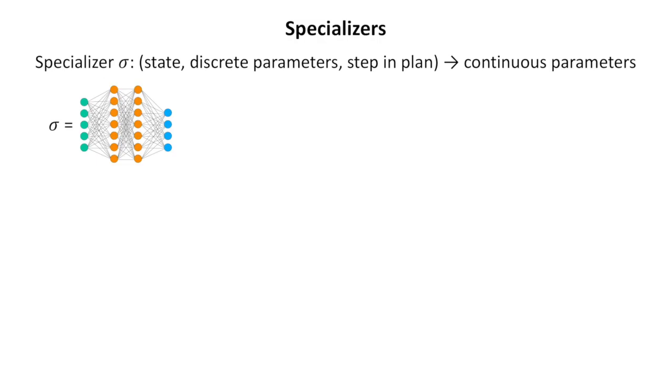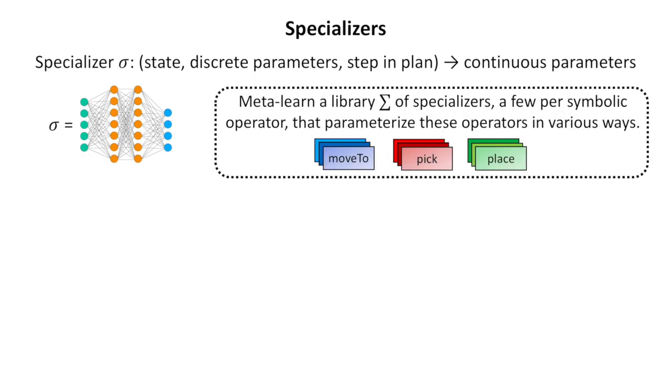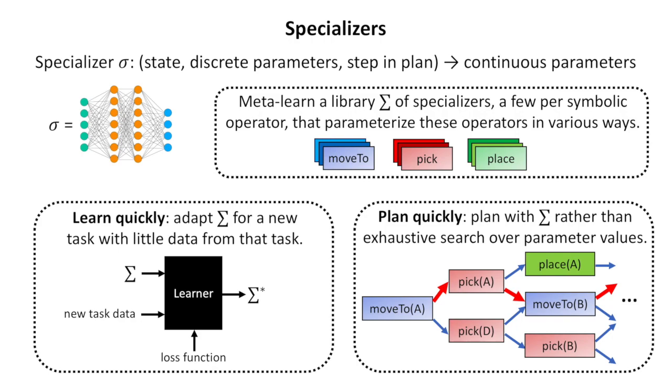Our strategy is to learn functions called specializers that generate values for these parameters based on the current state, discrete parameter values, and step in the plan. The specializers are implemented as fully connected deep neural networks. We meta-learn a variety of specializers that, on a new task, can be quickly adapted using relatively little data. Thus, our system learns quickly to plan quickly using these specializers.